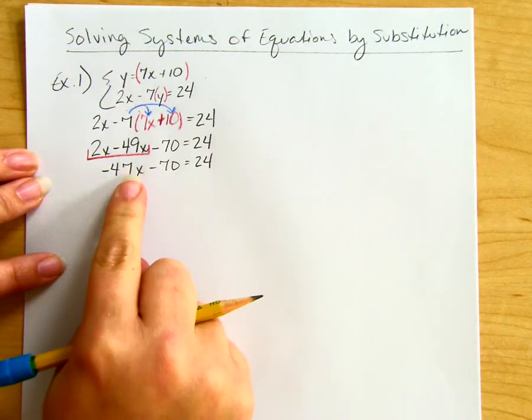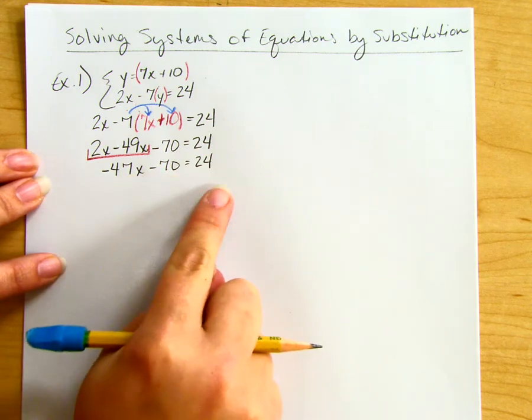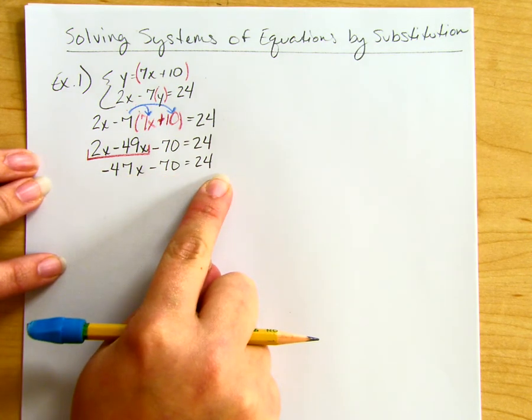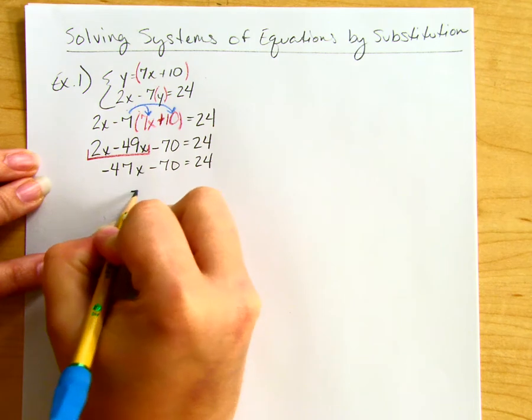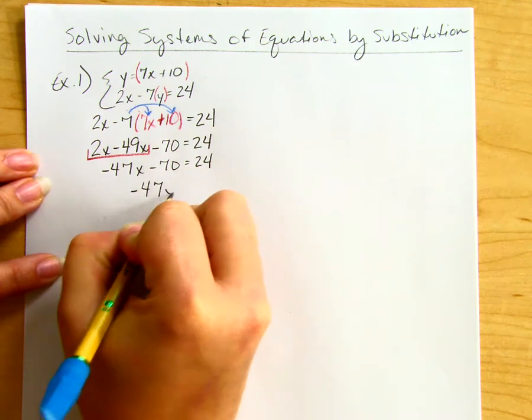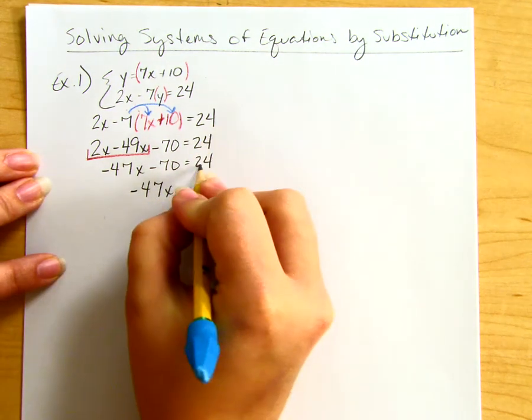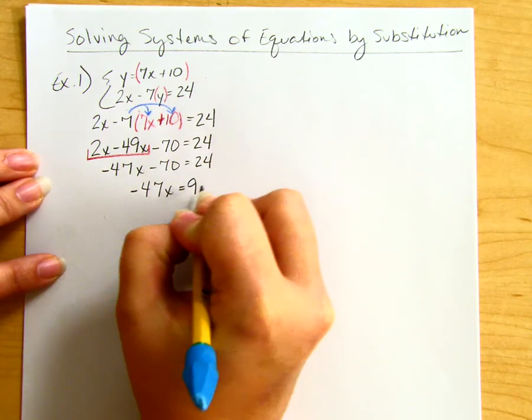Now I'm solving for x. I'll add 70 to both sides, and I get -47x = 94.